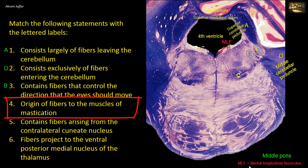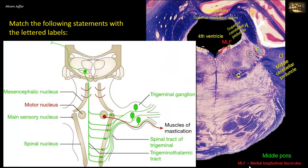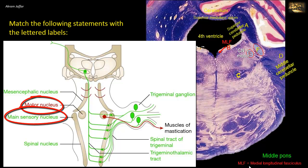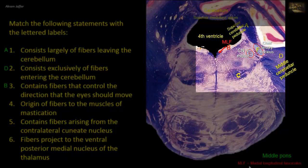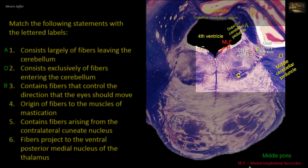In statement 4, the muscles of mastication are supplied by fibers originating from the motor nucleus of the trigeminal nerve. This nucleus is located at the level of the pons. The trigeminal nerve has three sensory nuclei: the mesencephalic nucleus at the level of the midbrain, the chief sensory nucleus at the level of the pons, and the spinal nucleus of the trigeminal at the level of the medulla and upper spinal cord. There is only one motor nucleus, located at the level of the pons, and E is the motor nucleus matching statement 4.